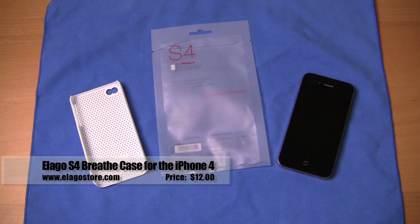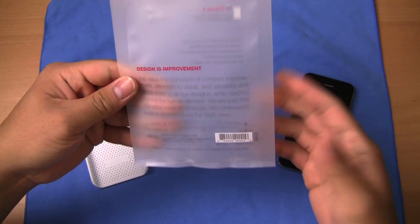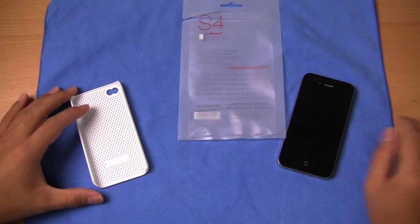As you can see, the package pretty much just has the case inside. What they send you is an airtight package with S4 and the logo on it. The case just comes right out of the sleeve - you just rip it out like a desiccant pouch. It just has the case inside, no microfiber, no screen shields, nothing like that.